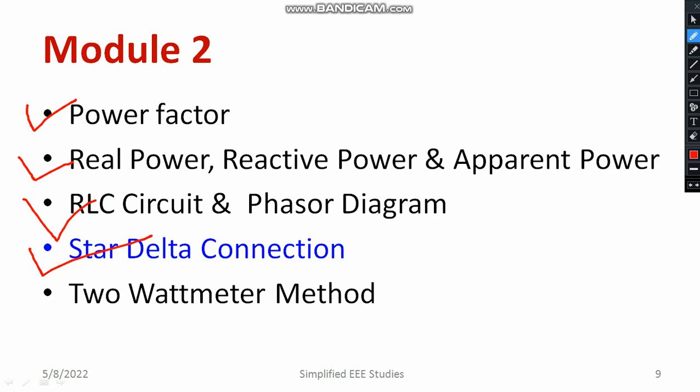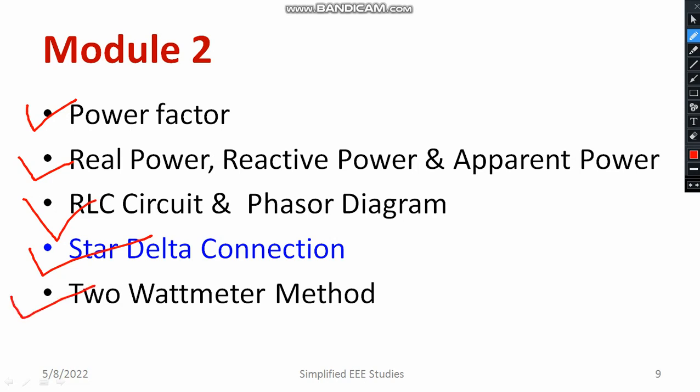For star and delta connection, you need to prove the relation between line quantities and phase quantities. A phasor diagram is mandatory and a simple circuit diagram is a must. For star connection, line voltage equals root 3 times phase voltage, and line current equals phase current — prove this using the parallelogram law of vector addition. Also, the two-wattmeter method is very essential and will also be asked in your basic electrical laboratory.